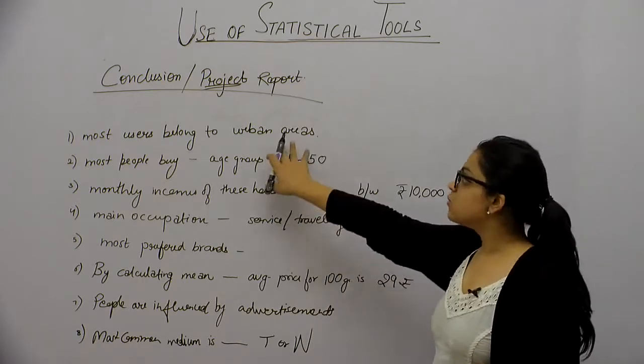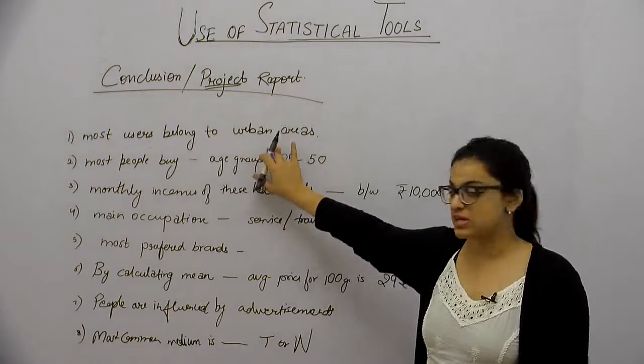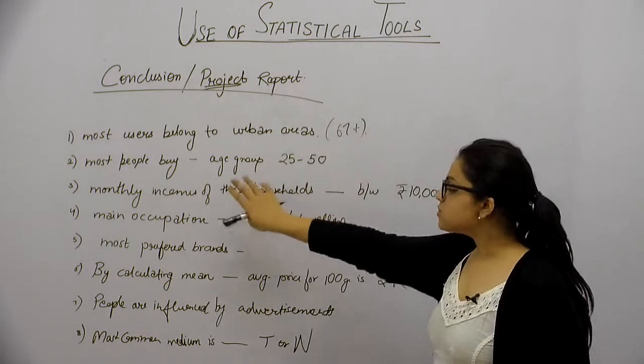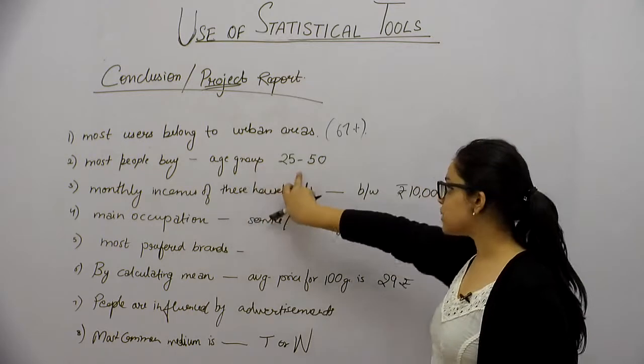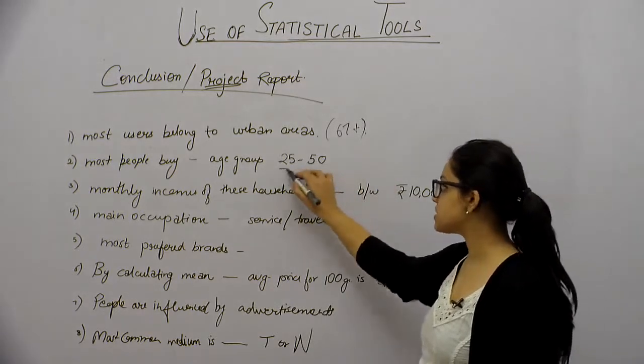For example, most users belong to urban areas. Urban areas are 67%. They use toothpaste. Most people buy between the age of 25 to 50. The most buyers are in the age of 25 to 50.